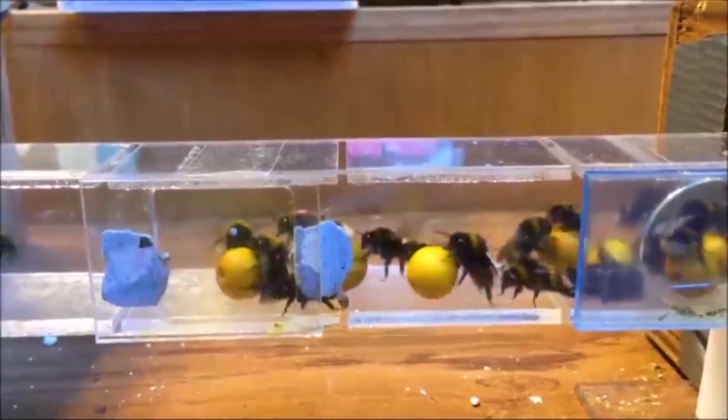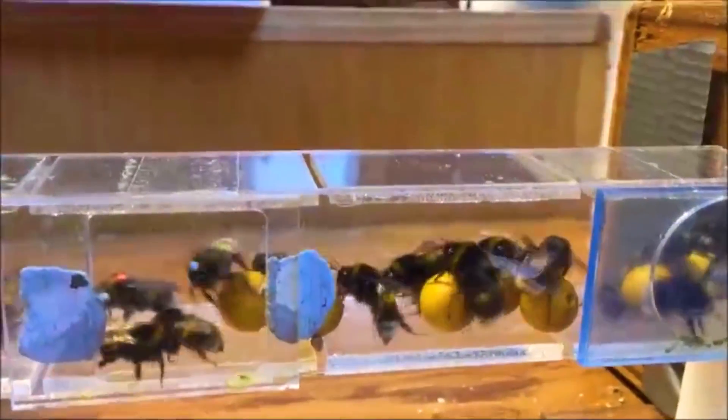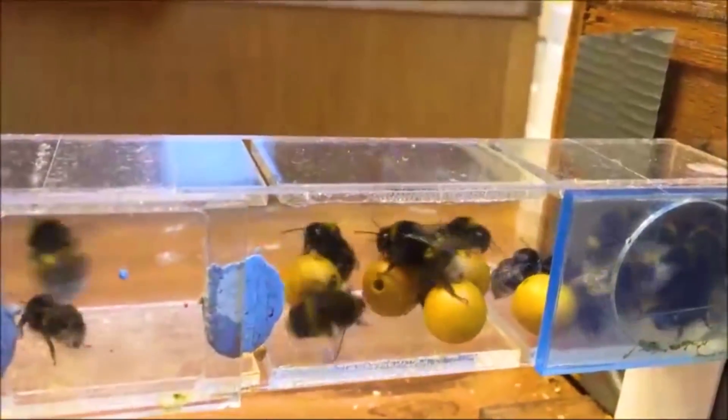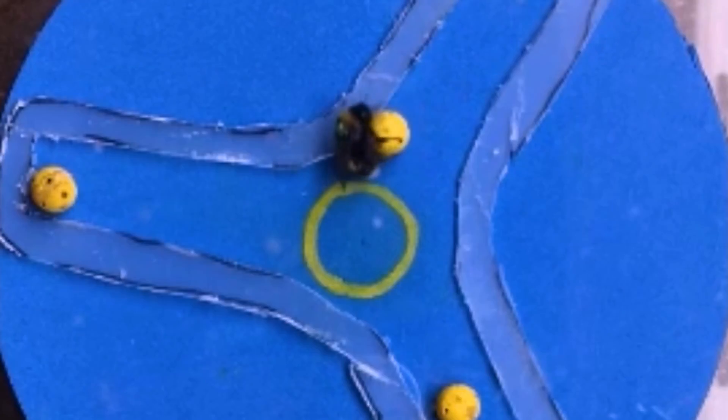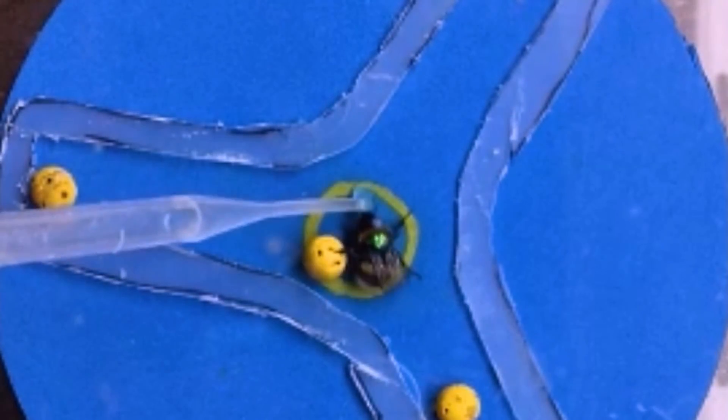The humble bumblebee has a solution to receive a reward rather than simply mimicking what they see others do. Bees were taught to move a ball to the center of a platform. If successful, they got a sugary treat.